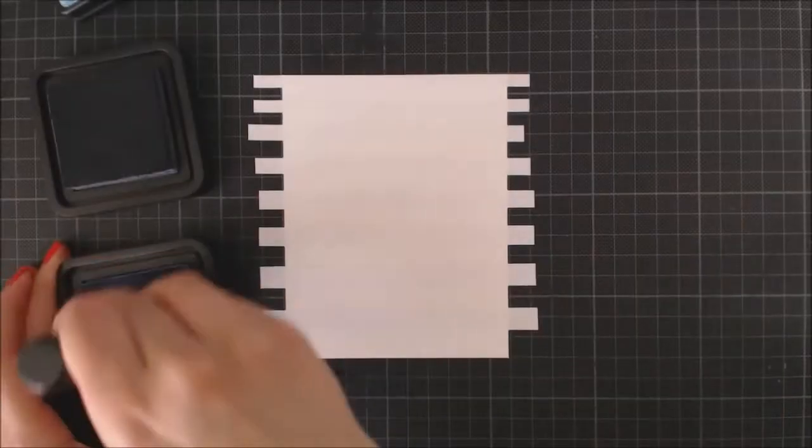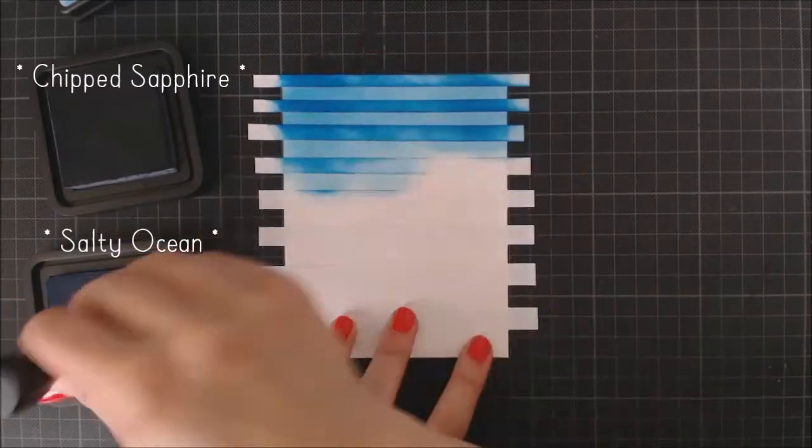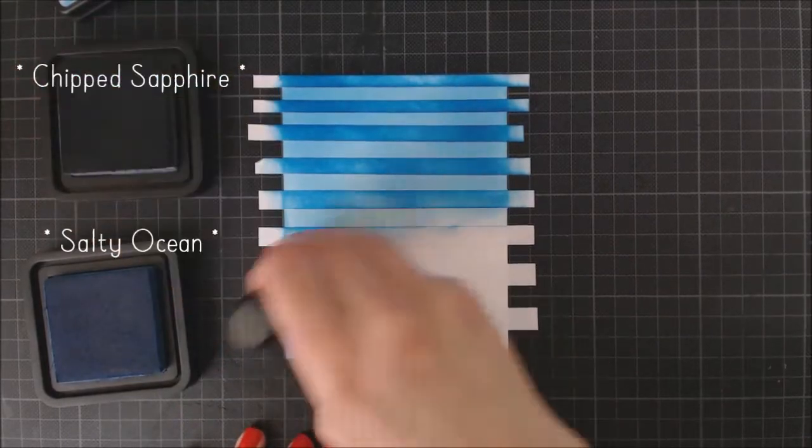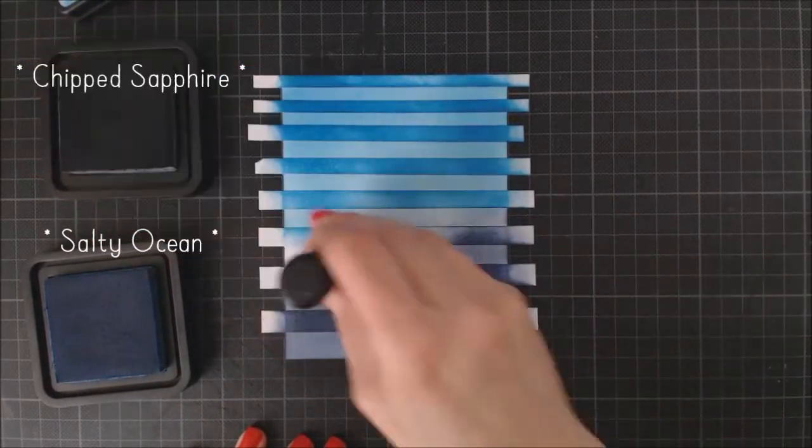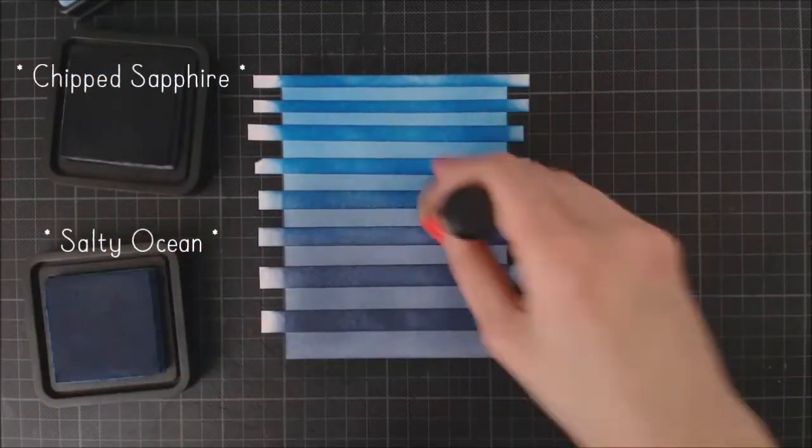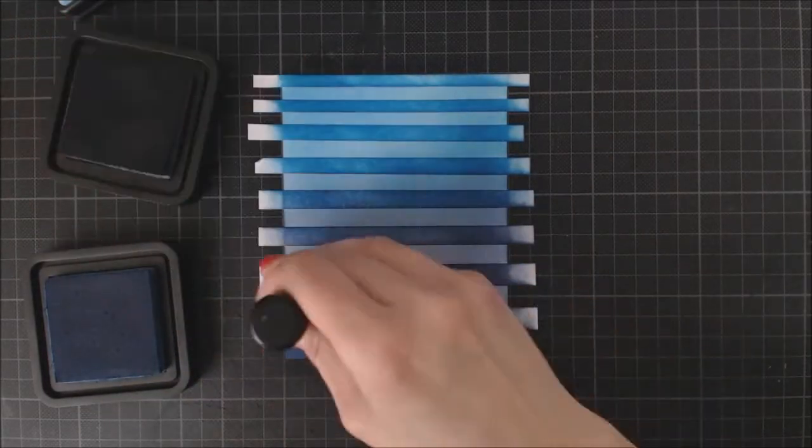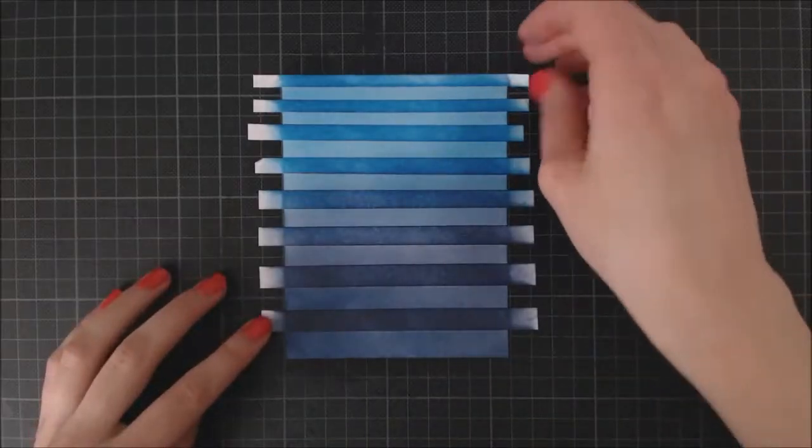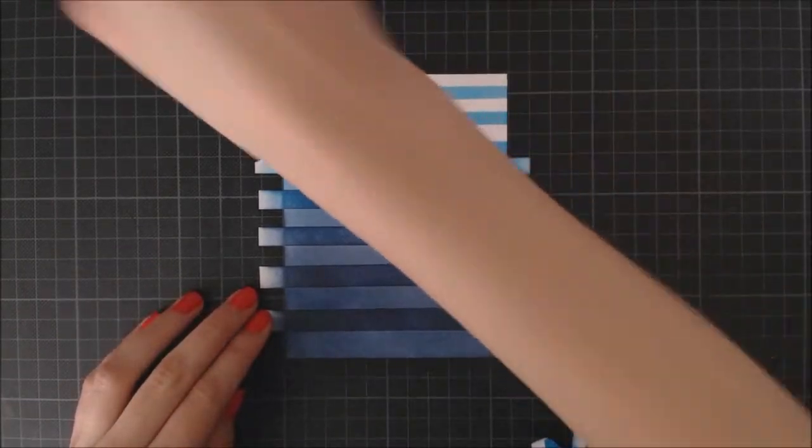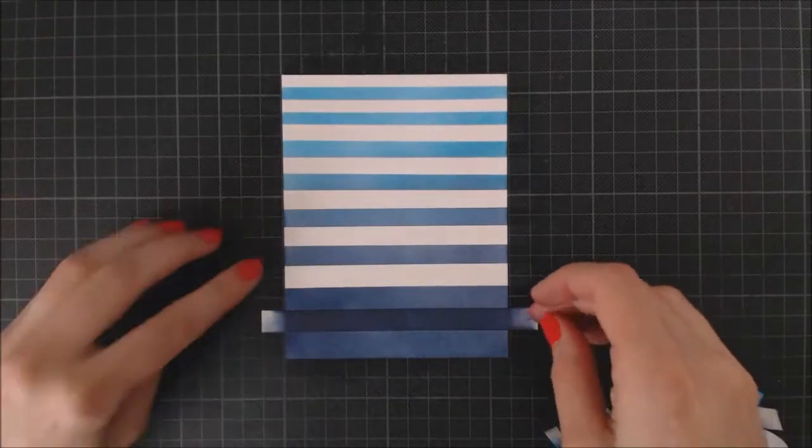Now that I have all my stripes in place, I'm going to take my Chipped Sapphire and Salty Ocean Distress Inks and apply them all over the panel with a blending tool. I'm using Salty Ocean on top of the cardstock and Chipped Sapphire on the bottom, and I'm blending them together in the middle zone. Since I discovered Bristol Smooth Cardstock, this is the only cardstock I use when I need to do some ink blending, because it's super easy and quick to achieve a nice and soft blending. So now I can peel off all those stripes and I really love how that turned out.